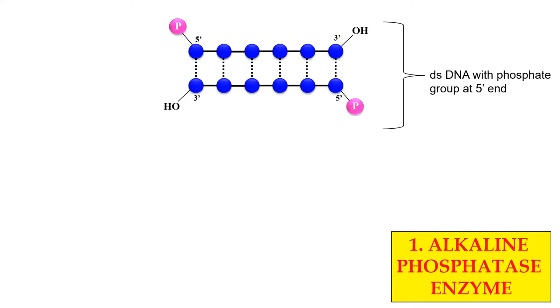First, Alkaline Phosphatase Enzymes. As the name indicates, these are the enzymes which remove the phosphate from their substrate under alkaline condition.